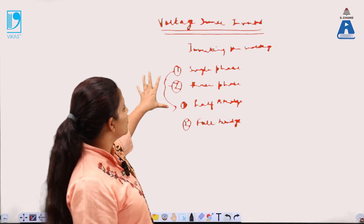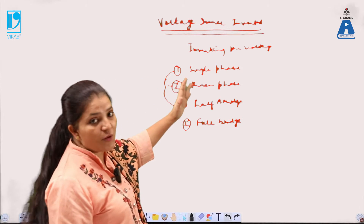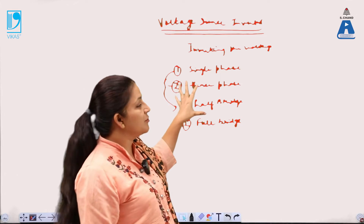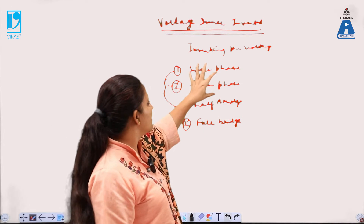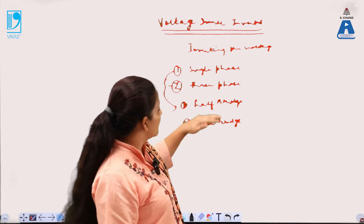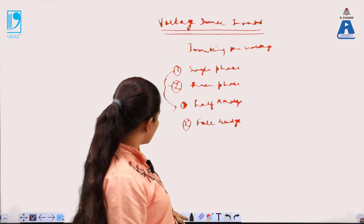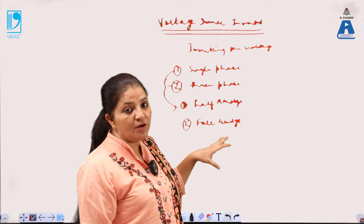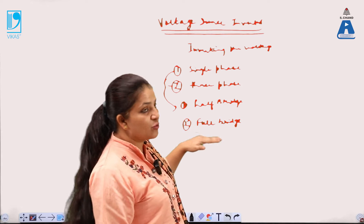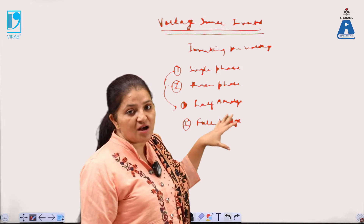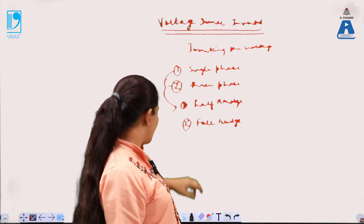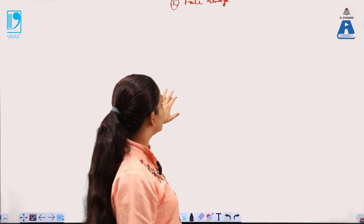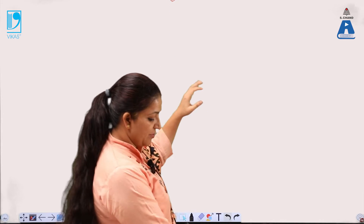The Voltage Source Inverter, based upon the power supply, can be divided into two parts: one is single phase and the other is three phase. Again, depending upon the capacitance or depending upon the input value, it can also be divided into two parts: one is a half bridge inverter and the second one is a full bridge inverter.